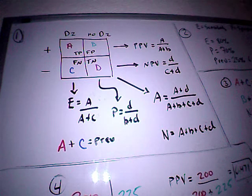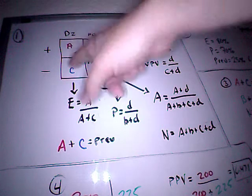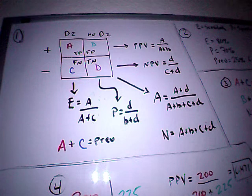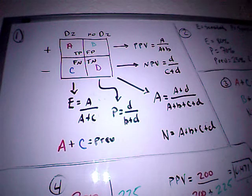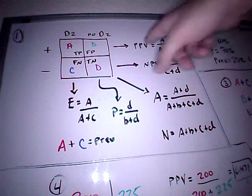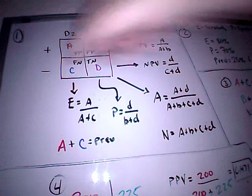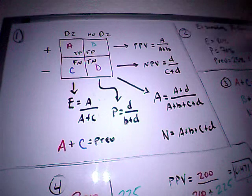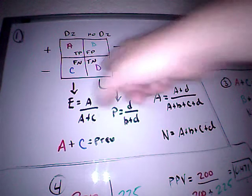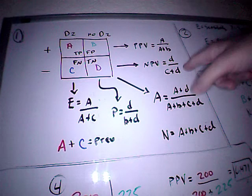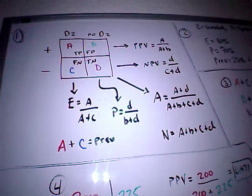And that allows us, once we know what A, B, C, and D are, that allows us to plug into these formulas here. So PPV is one of the things we're looking for. That is positive predictive value is A divided by A plus B. Negative predictive value is D divided by C plus D.